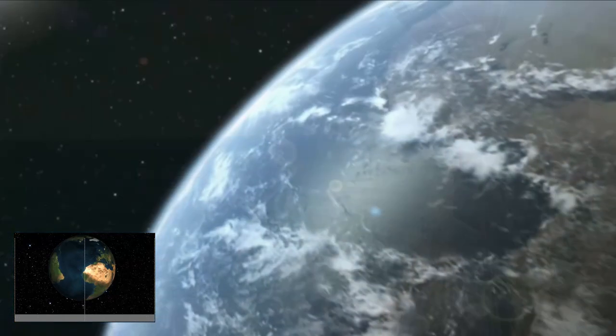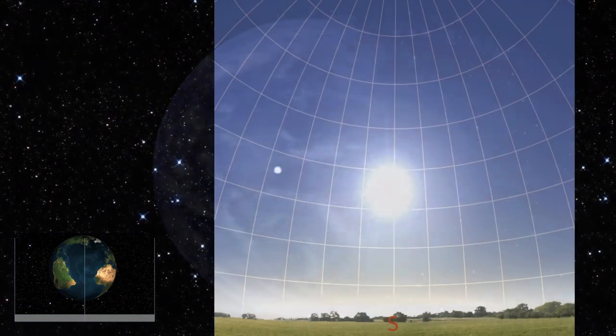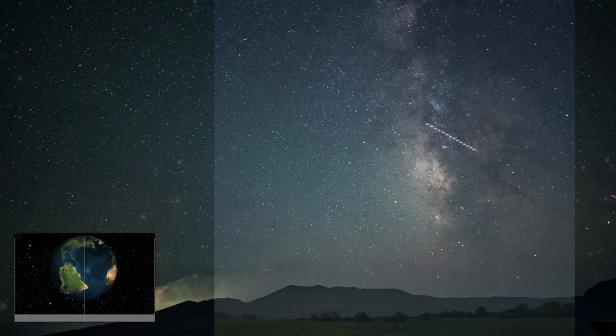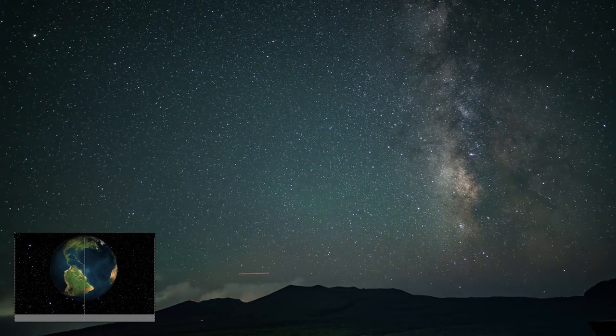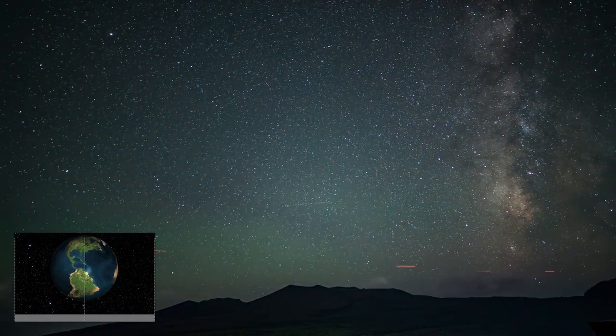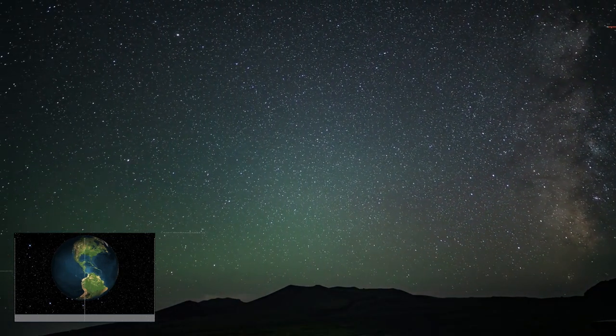However, we do notice the earth's orbit around the sun in other ways, such as the changing seasons, the length of the day, and the height of the sun. The starry sky also changes throughout the year due to the earth's orbit. We continuously see new stars and constellations at night, as we look in different directions of our galaxy at every time of year.